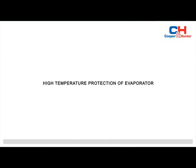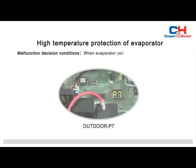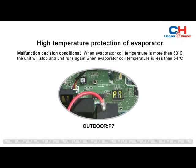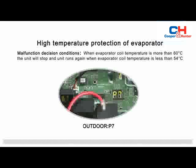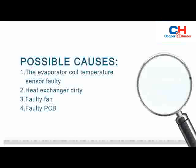High temperature protection of evaporator malfunction conditions: when evaporator coil temperature is more than 60 degrees Celsius, the unit will stop and run again when evaporator coil temperature is less than 54 degrees Celsius. The failure may be caused by a faulty evaporator coil temperature sensor, dirty heat exchanger, faulty fan, or faulty PCB.